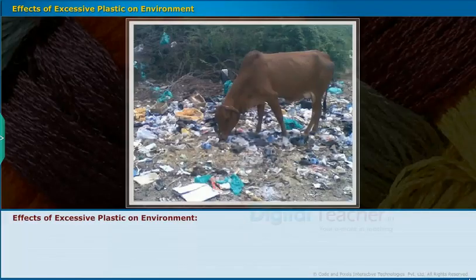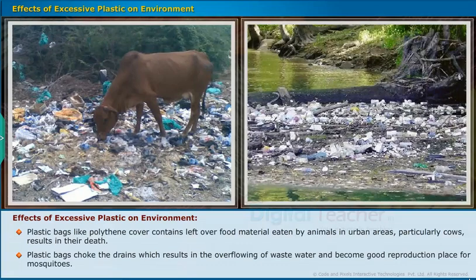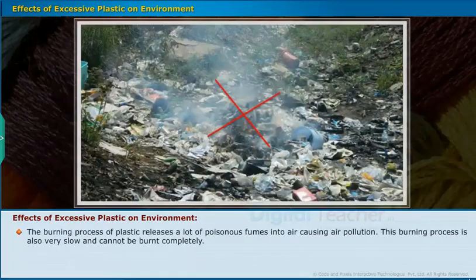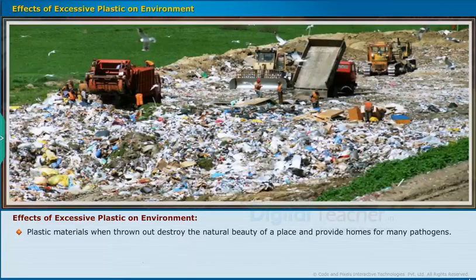Effects of Excessive Plastic on Environment: Plastic bags like polythene covers contain leftover food material eaten by animals — particularly cows — resulting in their death. Plastic bags choke the drains, resulting in overflowing of waste water and providing breeding grounds for mosquitoes. The burning of plastic releases poisonous fumes into the air causing air pollution, and this process is very slow and cannot burn plastic completely. Plastic takes several years to decompose, reducing water percolation into the soil and preventing replenishment of groundwater. Plastic materials thrown out destroy the natural beauty of a place and provide homes for many pathogens.